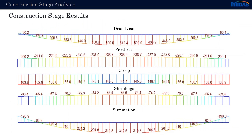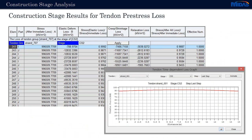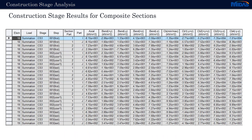Here is an example — dead load plus pre-stress plus creep and shrinkage effects can be added to get the total effect on the members by reading summation. Results can also be read for specific things such as tendon pre-stress losses — in table format we can read immediate losses, losses due to creep, and relaxation, and these losses can also be shown in a graph format. Specific results can also be read for composite sections, where each part has specific points where stresses or forces can be read.